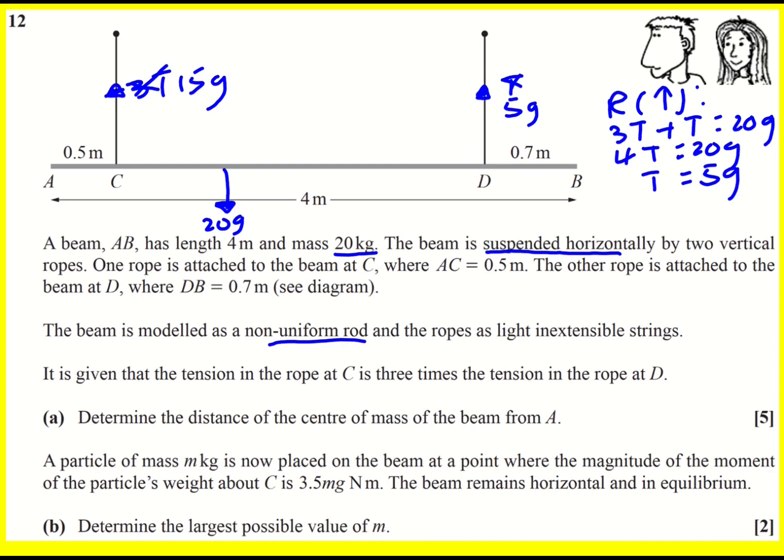And the other thing you have to consider is moments. So about any point the resultant moment will be zero. Moments given by force times distance or the perpendicular component of the force times distance. So we just need to consider where to take moments about. Because I'm being asked for the distance of the center of mass from A, I might as well just take moments from A and say that this distance here is x and work out x basically.